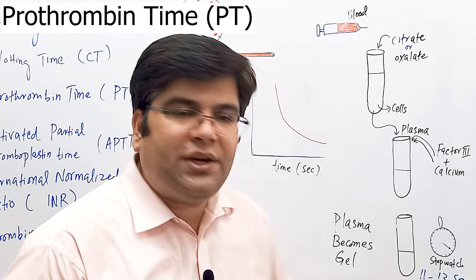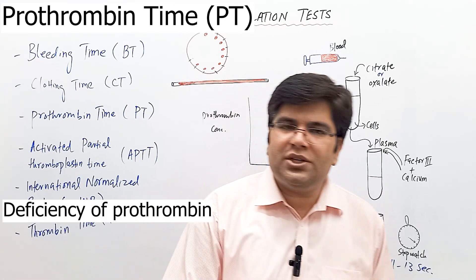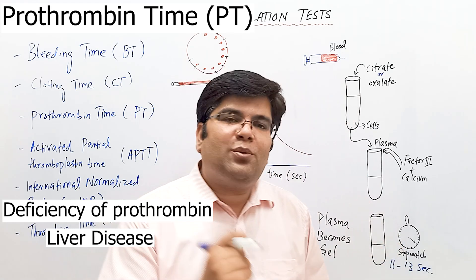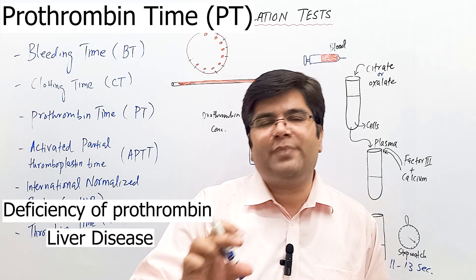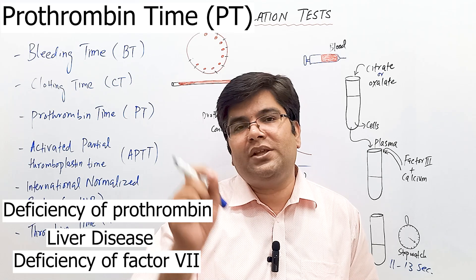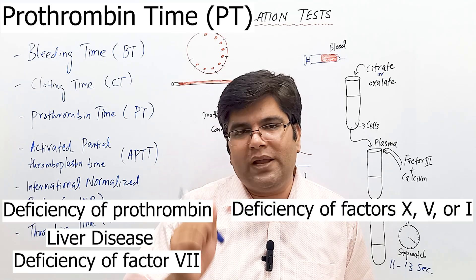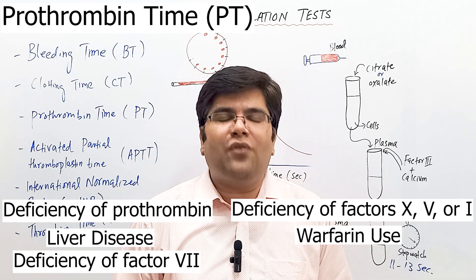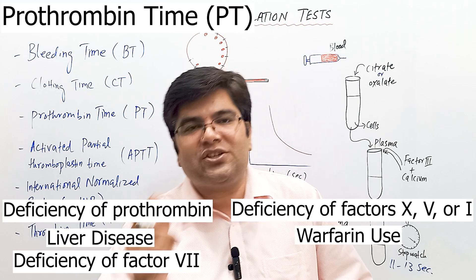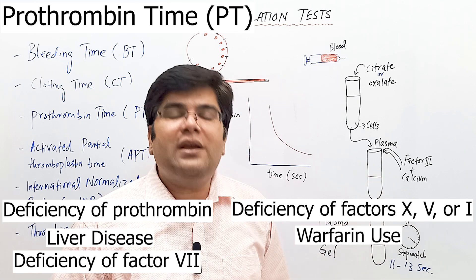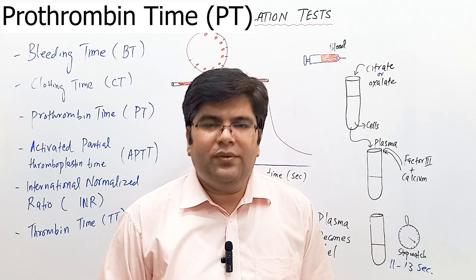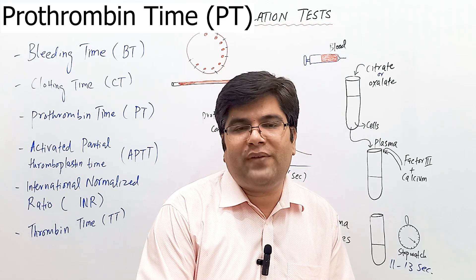Normal prothrombin time is 11 to 13 seconds. PT is increased when prothrombin is deficient, in liver disease, in deficiency of any factor in the extrinsic pathway (e.g., factor 7), or in deficiency of factors in the common pathway (factors 10, 5, and 1). Warfarin, which antagonizes vitamin K, prolongs PT by affecting clotting factors in the extrinsic and common pathways. PT is also prolonged in vitamin K deficiency. However, in hemophilia, PT is normal because only the intrinsic pathway is affected.